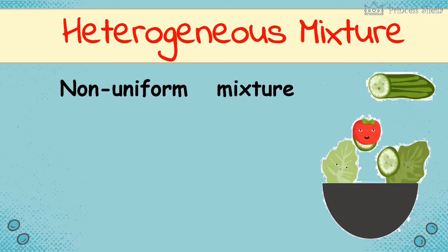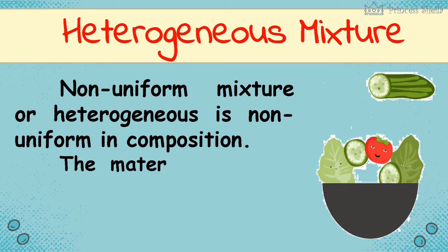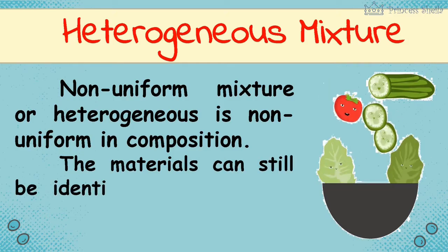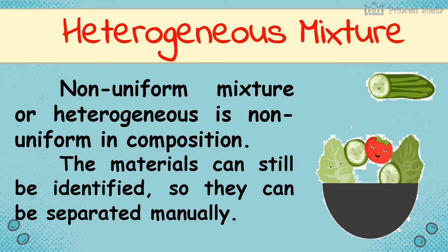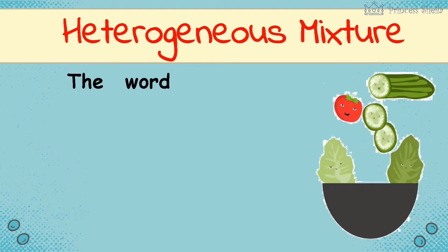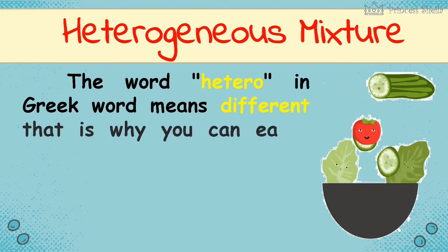Non-uniform mixture or heterogeneous is non-uniform in composition. The materials can still be identified, so they can be separated manually. The word hetero in Greek word means different, that is why you can easily identify its components.